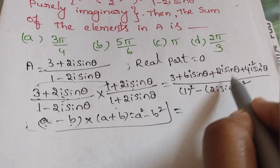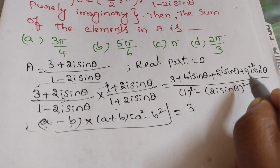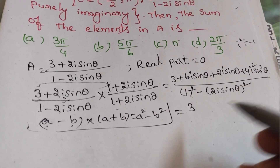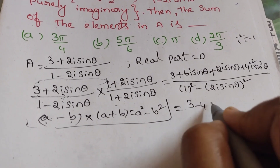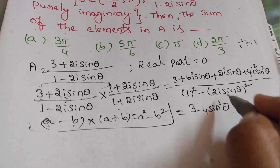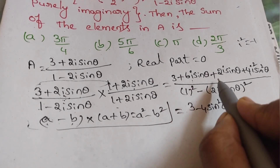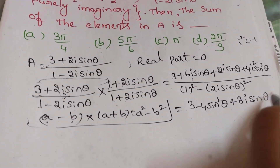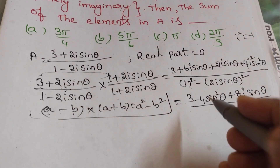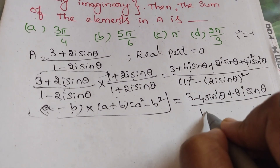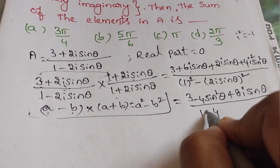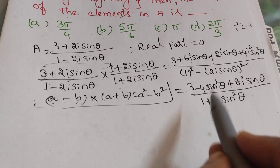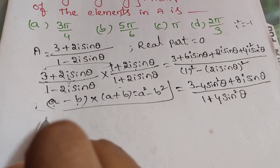Now simplify: i-squared equals minus 1, so 4 times minus 1 gives minus 4 sin-squared theta in the numerator. Adding real terms: 3 minus 4 sin-squared theta. For imaginary terms: 6i sin theta plus 2i sin theta gives 8i sin theta. The denominator becomes 1 plus 4 sin-squared theta.